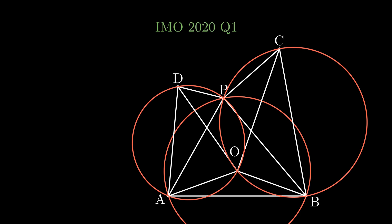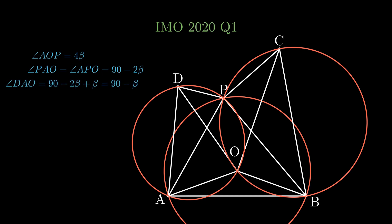Note that angle AOP is equal to 4β, since the angle at the center is twice the angle at the circumference. By triangle AOP being isosceles, note that angle PAO is equal to angle APO, which is equal to 90 minus 2β. So we get that angle DAO is equal to β plus (90 minus 2β), which equals 90 minus β, whereas angle DPO is equal to 3β plus (90 minus 2β), which equals 90 plus β. Hence the two opposite angles of this quadrilateral add up to 180 degrees, and so ADPO is cyclic.